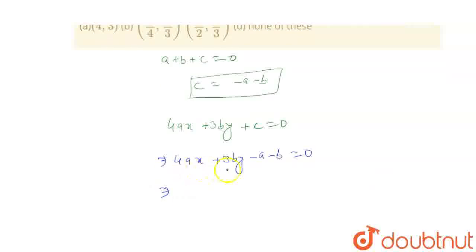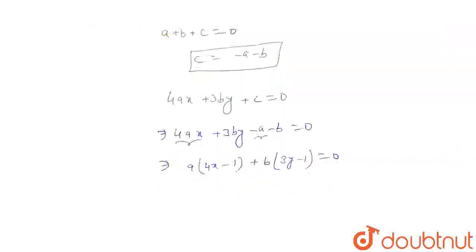You can take common a from here and here, from this and this. A will be common then 4x minus 1, plus b will be common, 3y minus 1 is equal to 0.